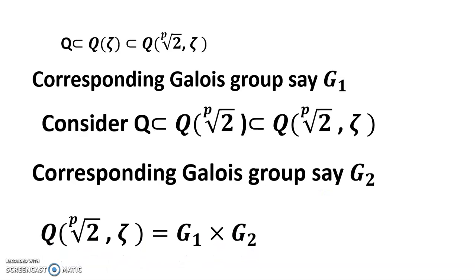The Galois group of ℚ(2^(1/p), ξ) over ℚ equals G1 cross G2, meaning the Galois group would possibly be a product of G1 and G2 with some relation between the generators.